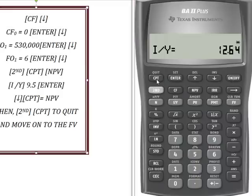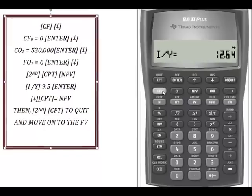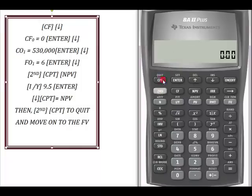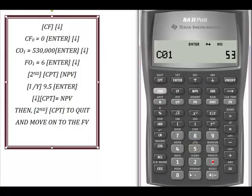Now I'm going to work on the wine department. I'm going to hit 2nd clear work, clear the time value of money keys, go to cash flows, and clear work again. I'm going to say cash flows, and the initial cash flow is zero — hit enter, then down. Cash flow one is going to be $530,000 — enter, down. The wine department project has a six-year life, so I enter six, then enter and down.